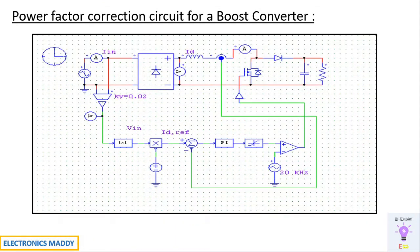This is the PSIM model of a power factor correction circuit for a boost converter. Let us try to understand what we are trying to do in the circuit, and once that is clear, you will be able to simulate it. We are using an AC supply and converting it to DC using an uncontrolled rectifier. You can go for a controlled rectifier configuration as well — it totally depends on your requirement. The DC voltage obtained at this point is given as an input to a boost converter.